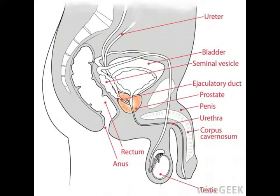Stratified cuboidal epithelium is one of the many types of epithelial tissue. It is less common than other types of epithelial tissue, and it has several locations in the body: sweat gland ducts, egg-producing vesicles or follicles of the ovaries, and sperm-producing ducts, or seminiferous tubules, of the testis.